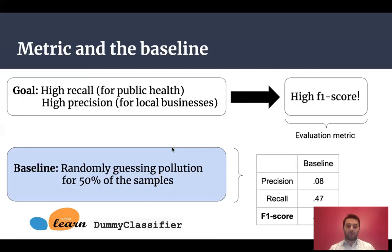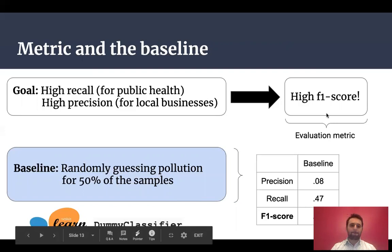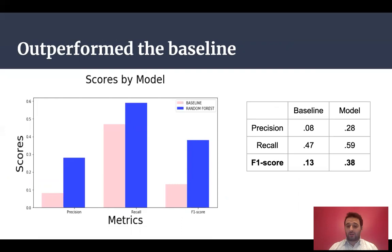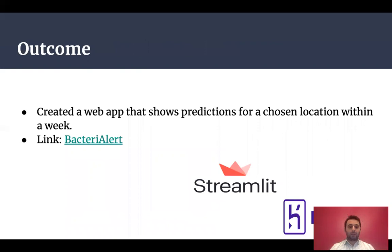My baseline was created by a dummy classifier that randomly guesses pollution 50% of the time. My model outperforms the baseline — I almost tripled the F1 score for this problem.